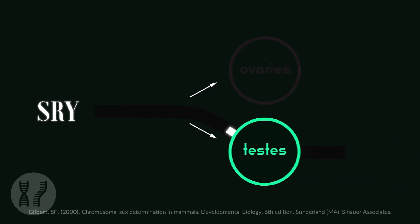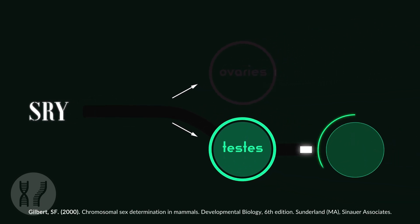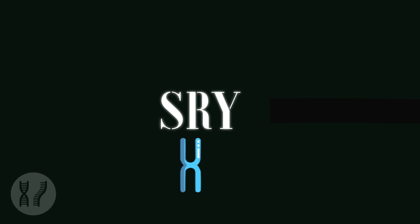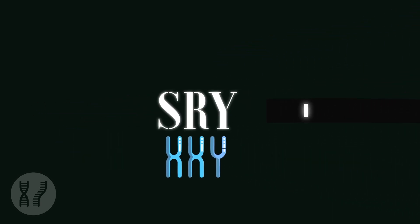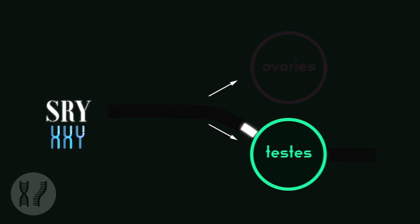If the SRY gene is present, functional, and active, it initiates a complex set of gene cascades causing male development. Fetuses with only one X chromosome do not have the SRY gene and develop as females. Whereas fetuses with XXY chromosomes do have the SRY gene and develop as males.